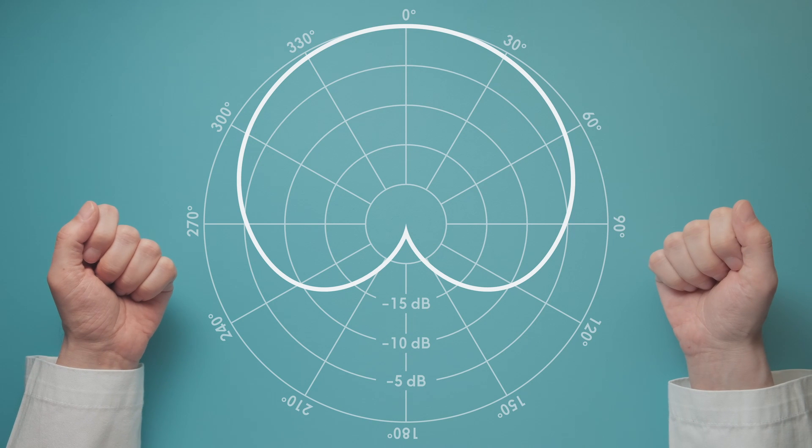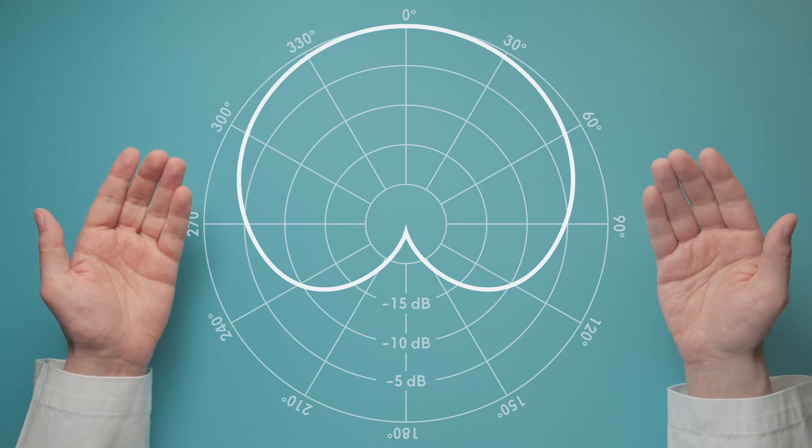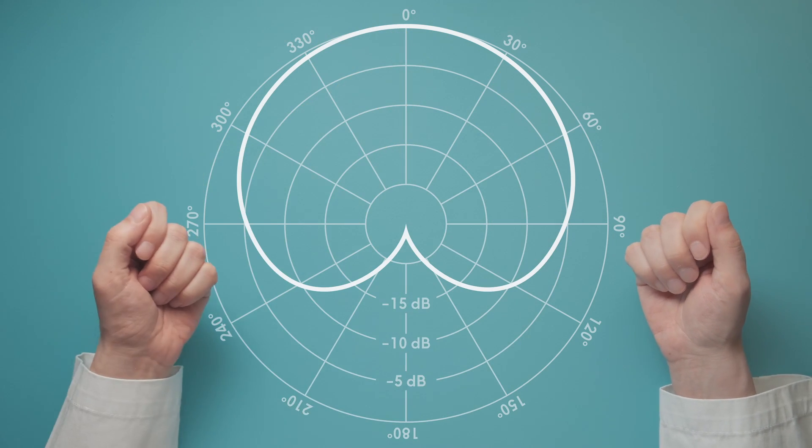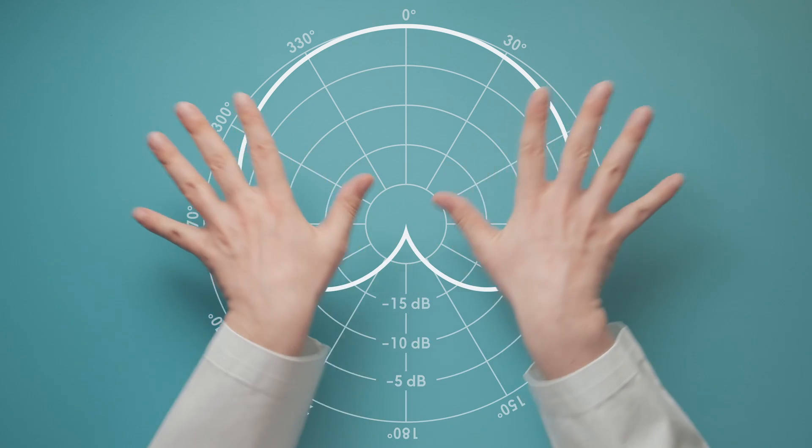This is the polar pattern chart of a cardioid microphone. You know, cardioid because of this heart shape. A polar pattern chart like this one describes how well a microphone hears in certain directions.